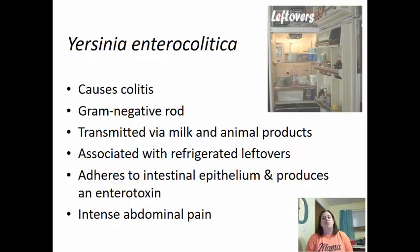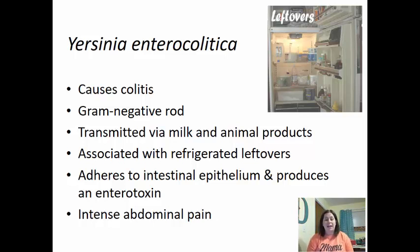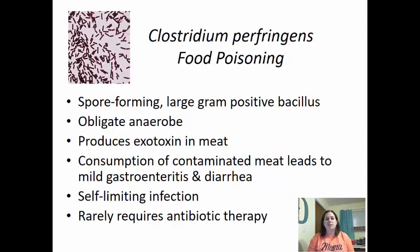Yersinia enterocolitica causes colitis. It is a gram-negative rod transmitted via milk and animal products, associated with refrigerated leftovers. It adheres to the intestinal epithelium and produces enterotoxins, causing intense abdominal pain that is often misdiagnosed as appendicitis. Clostridium perfringens causes food poisoning — it is a spore-forming large gram-positive obligate anaerobic bacillus that produces an exotoxin in meat. Consumption of contaminated meat leads to mild gastroenteritis and diarrhea. It is self-limiting and rarely requires antibiotic treatment; the main intervention is rehydration.